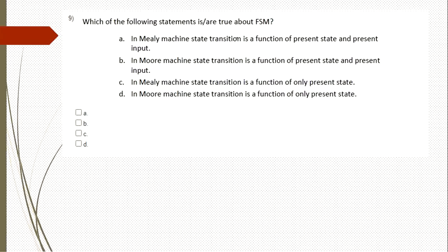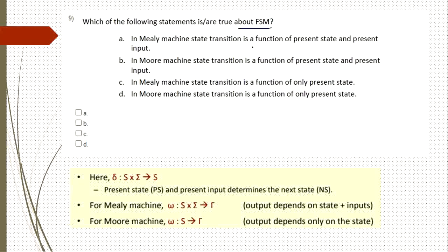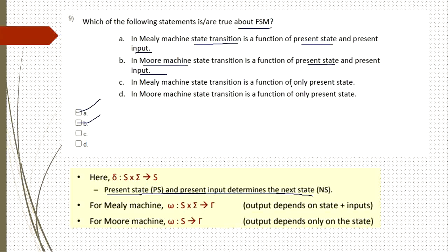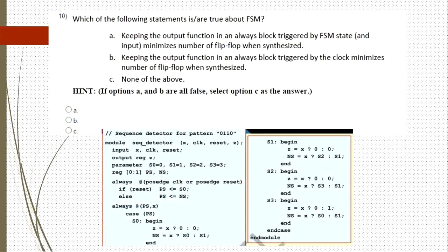The ninth question asks which statements are true about FSM state transitions. In a Mealy machine, state transition is a function of present state and present input — true. In a Moore machine, state transition is also a function of present state and present input — also true. The options stating transition depends only on present state are wrong. So A and B are correct for state transition.